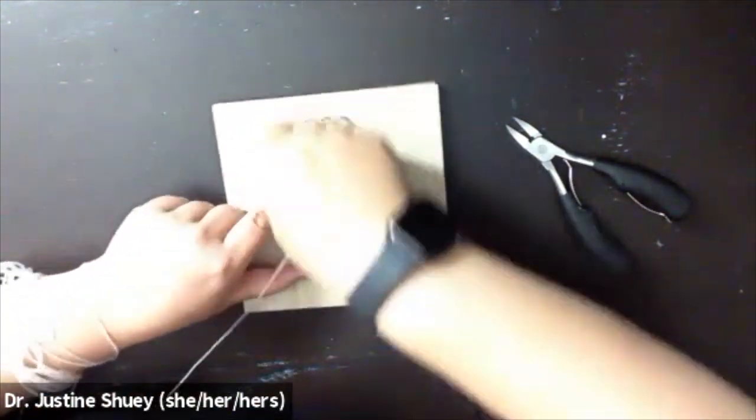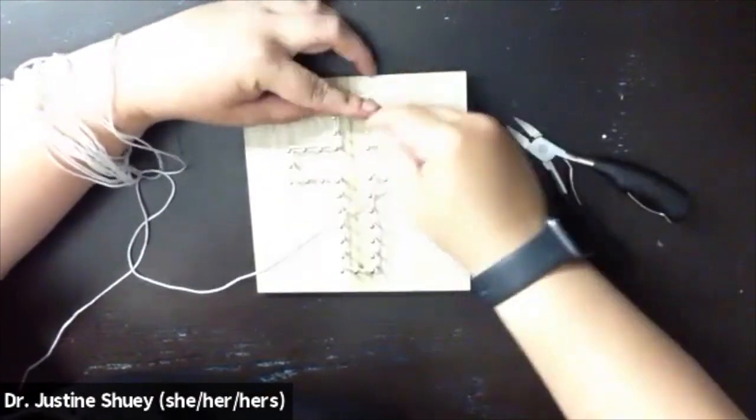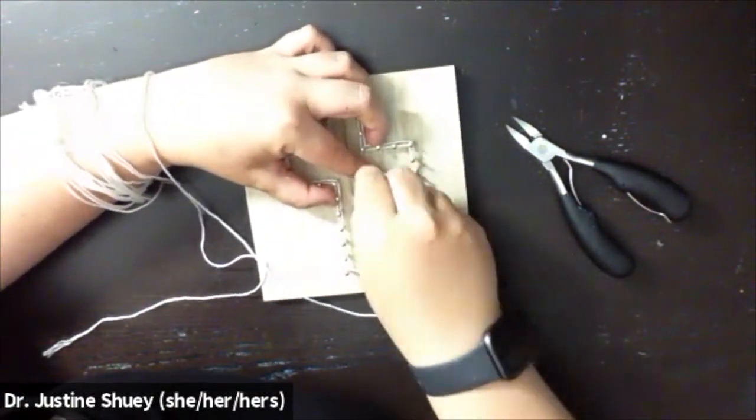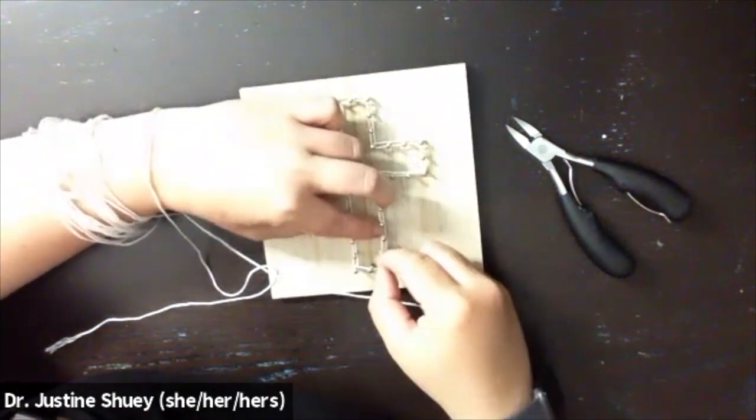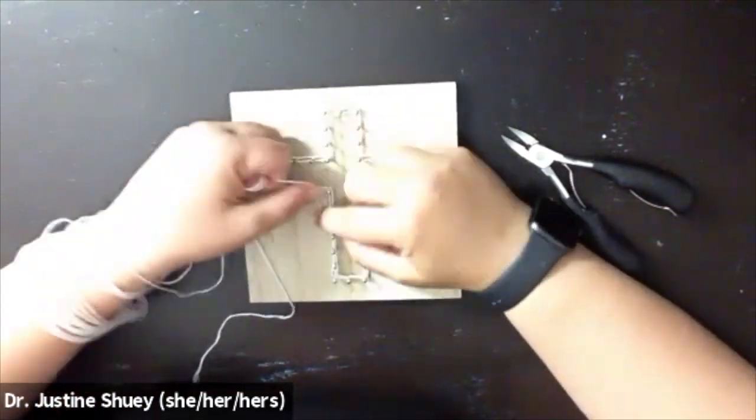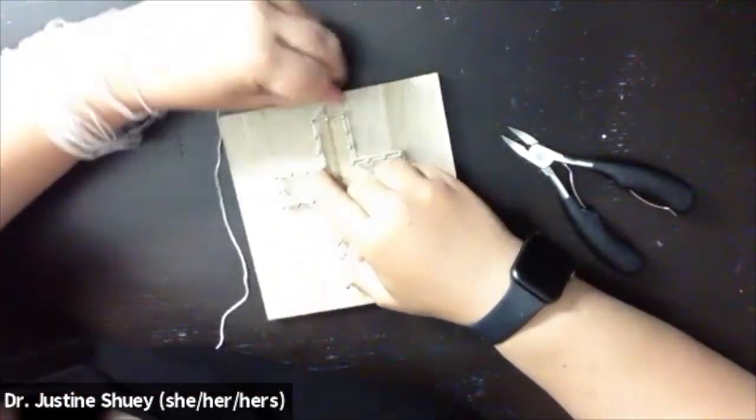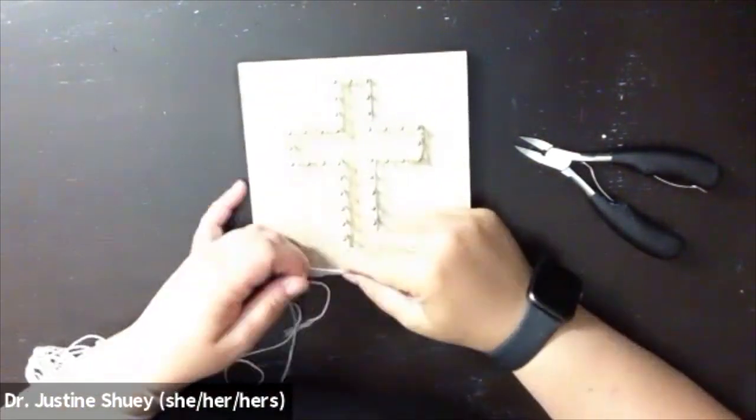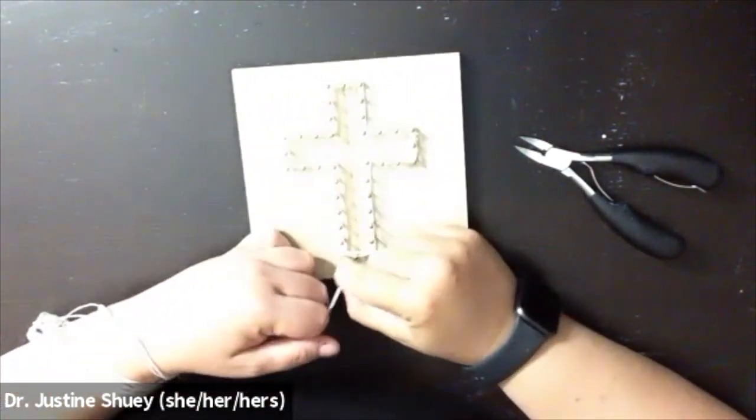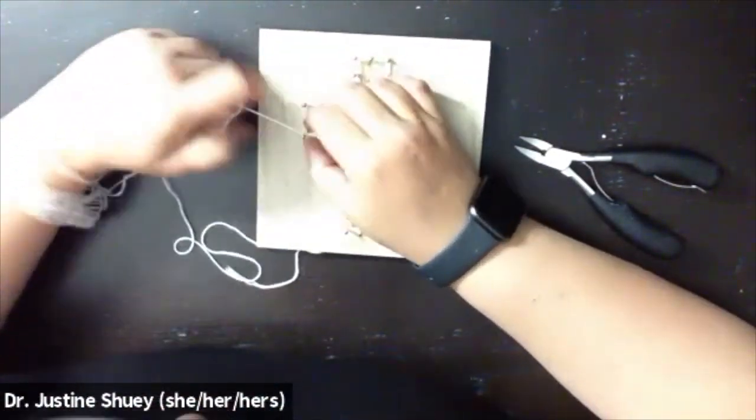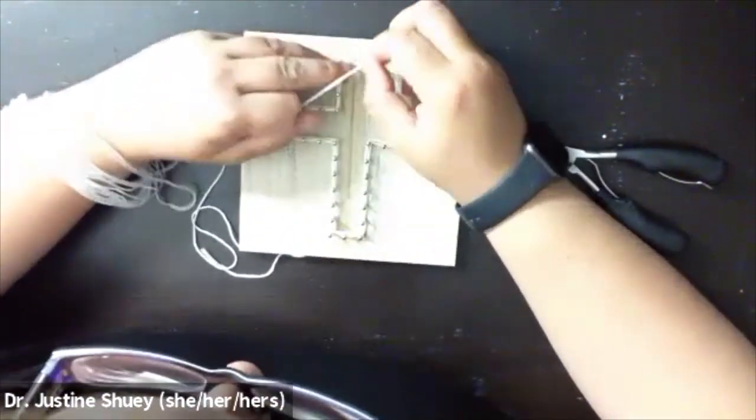Then I'm going to criss-cross the string between each of the nails. Then I'm going to criss-cross the strings between the center of the cross itself in some sort of a pattern that looks nice. There's no right or wrong way to do this. You're just trying to fill in the space inside the cross to make it look like a cross.